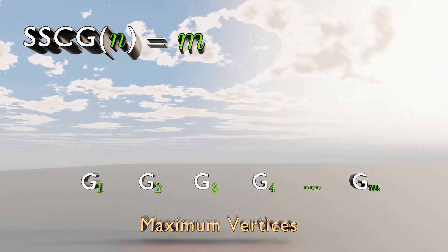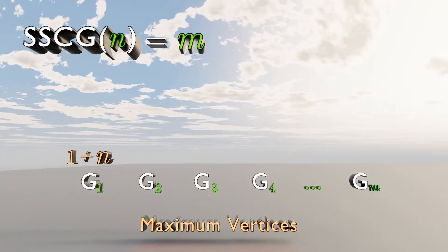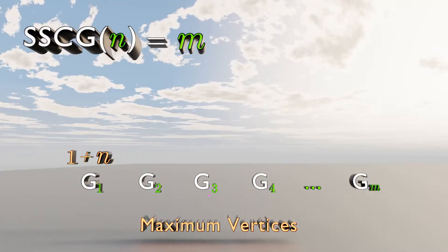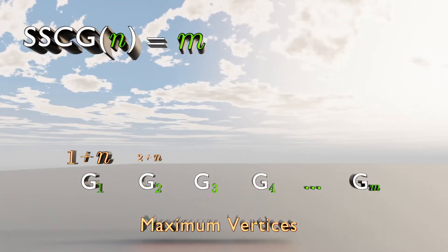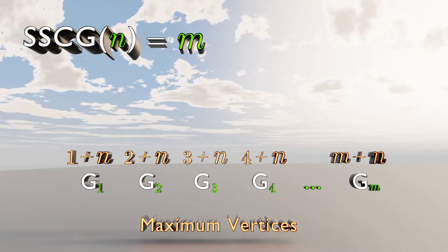Graph number 1 can have a maximum of 1 plus N vertices. Graph number 2 can have a maximum of 2 plus N vertices. And this sequence goes on.